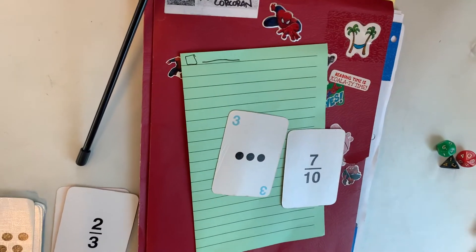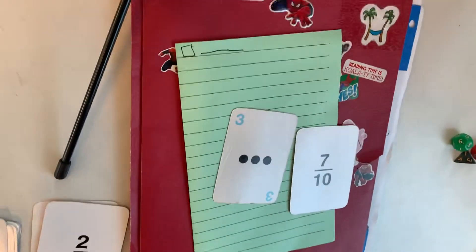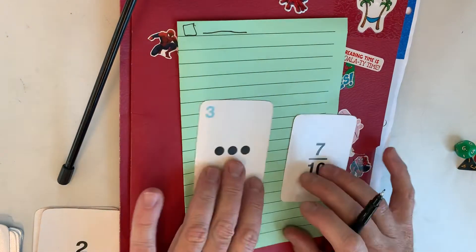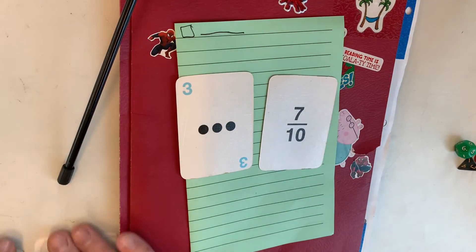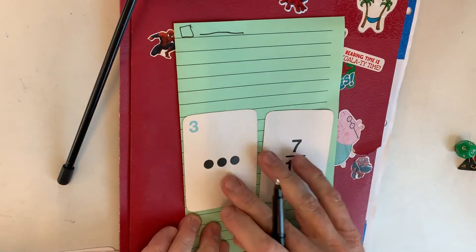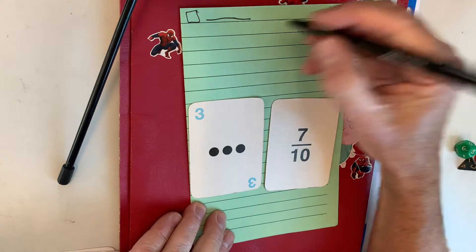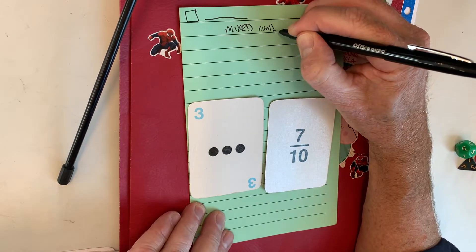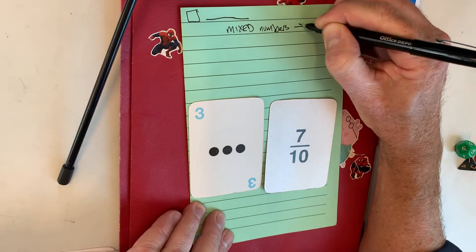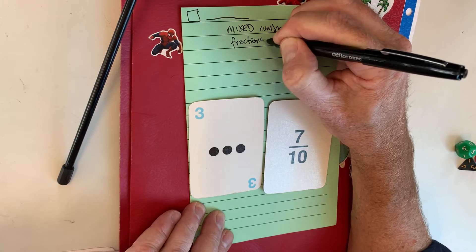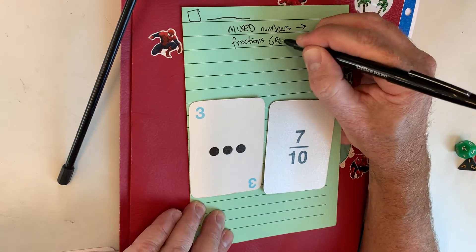Hello out there. This is a Mr. Corcoran math video on turning mixed numbers into what were called improper fractions back in the day, but I think it's more accurate to describe them as fractions greater than one. So, mixed numbers to fractions greater than one.